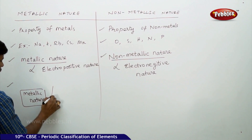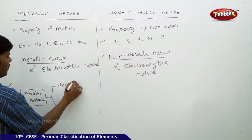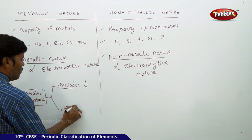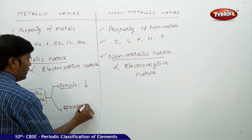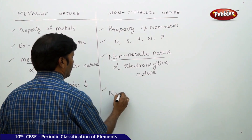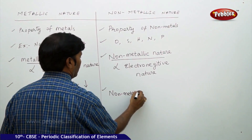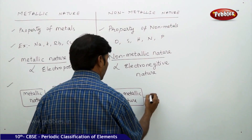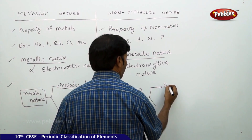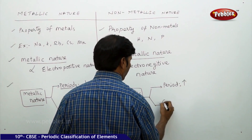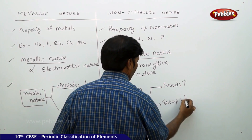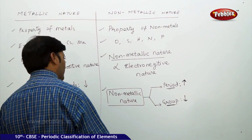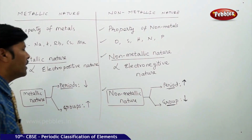If you go for periods, metallic nature decreases, and for groups it increases. Similarly, non-metallic nature in a period increases, and in a group it decreases. An upward arrow is meant for increase and a downward arrow is meant for decrease in the case of the variation of metallic and non-metallic nature.